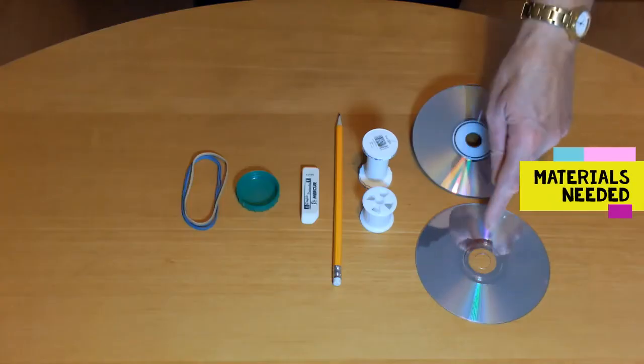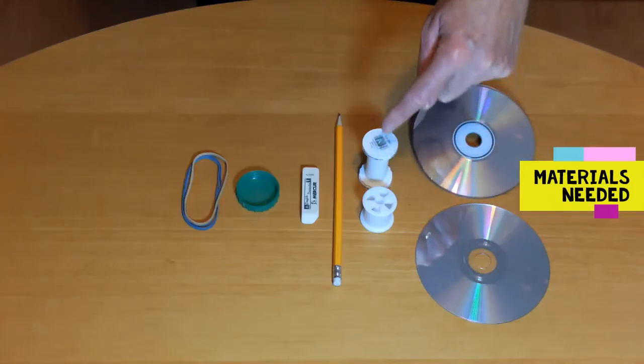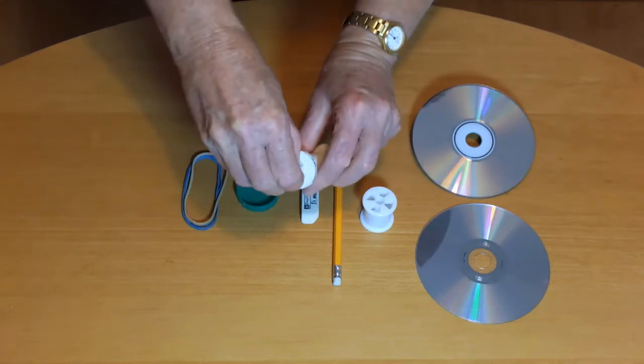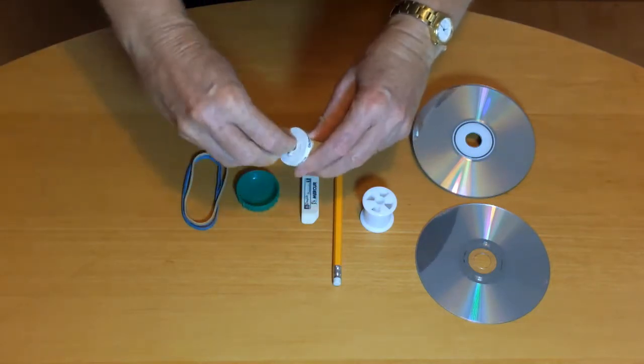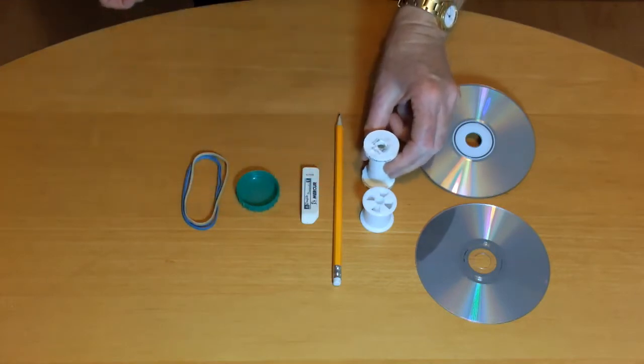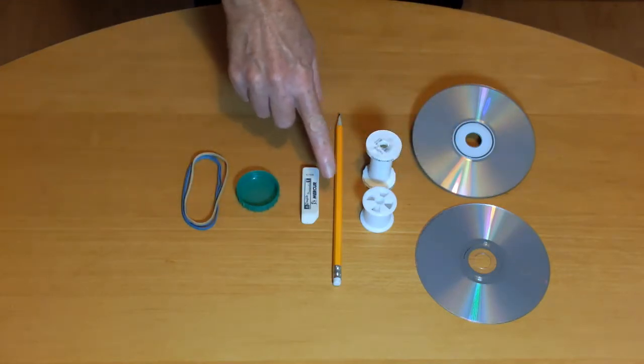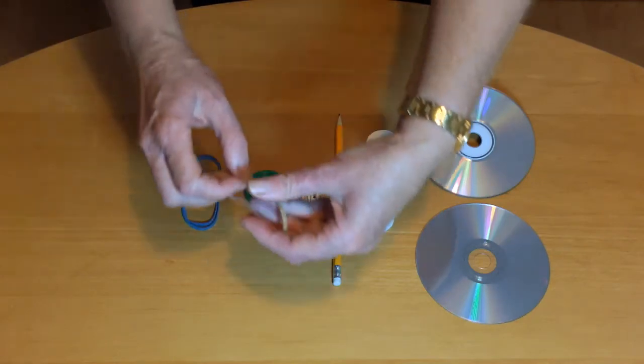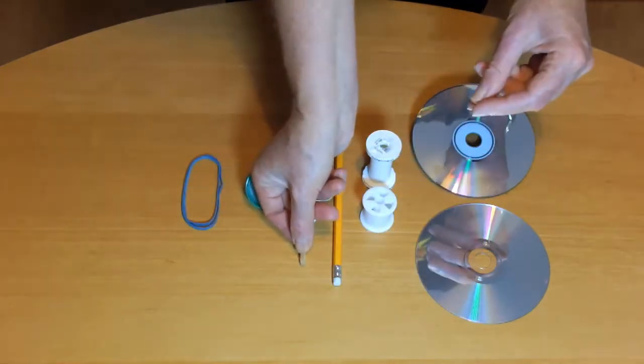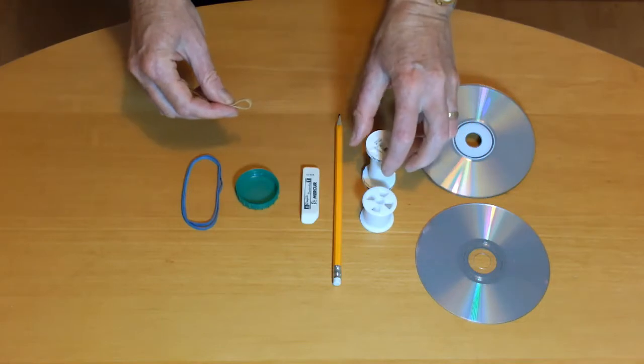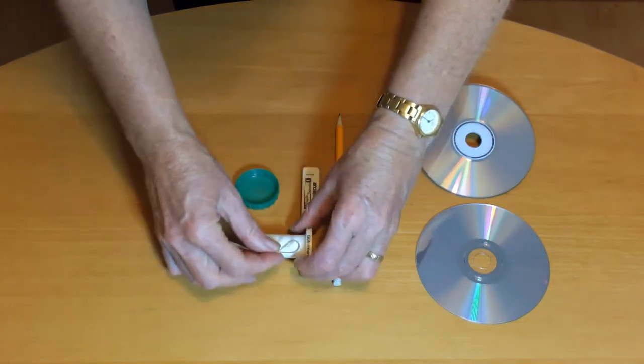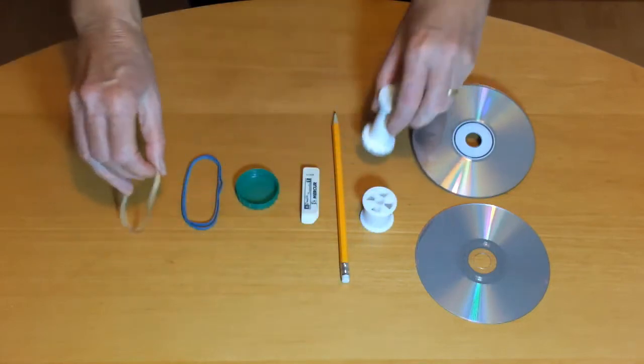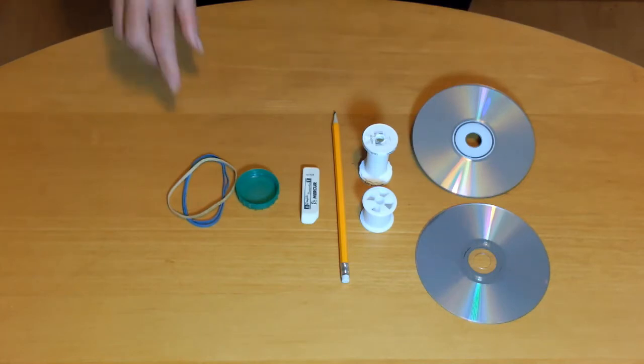You'll need two old CDs or DVDs, a plastic cotton reel. If it has a paper label, then make sure it's clear of the hole. A long pencil, an eraser, a plastic milk bottle lid and a rubber band about 3mm wide and about 4cm longer than the cotton reel. It's a good idea to have spare rubber bands in case you snap any.